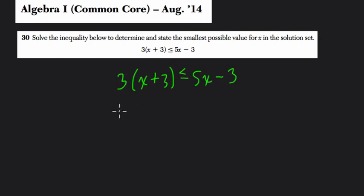3 times x plus 3 is 3x plus 9. We distribute that 3. 3 times x is 3x, 3 times 3 is 9. That's less than or equal to 5x minus 3.